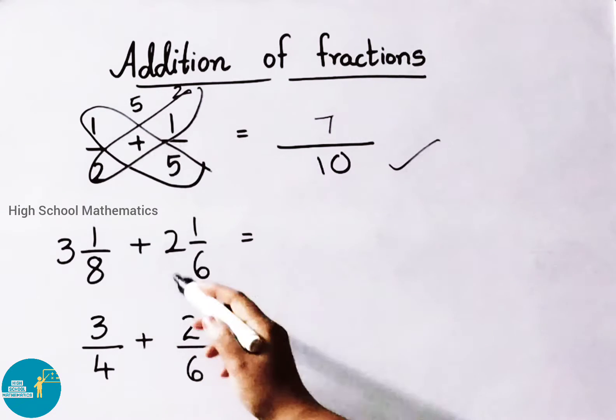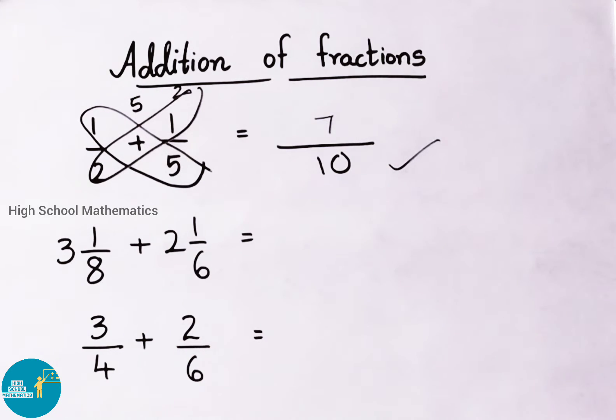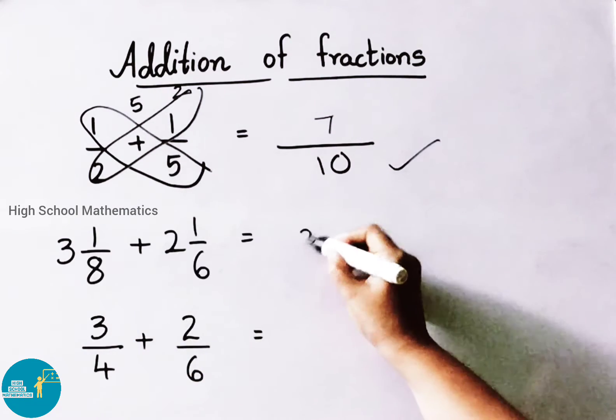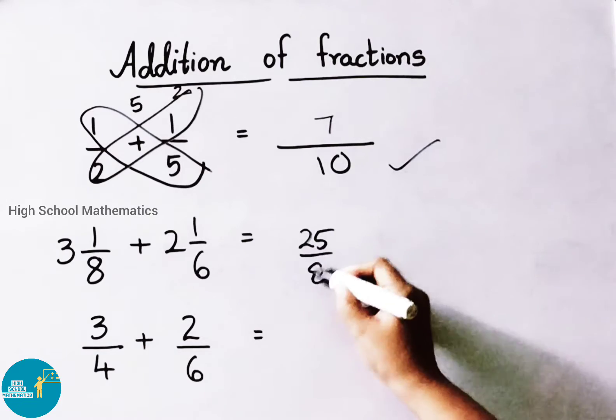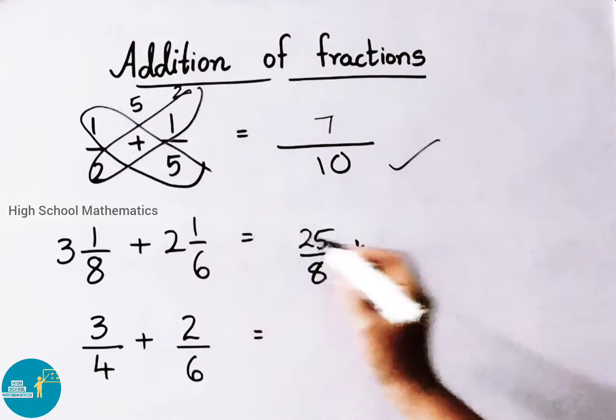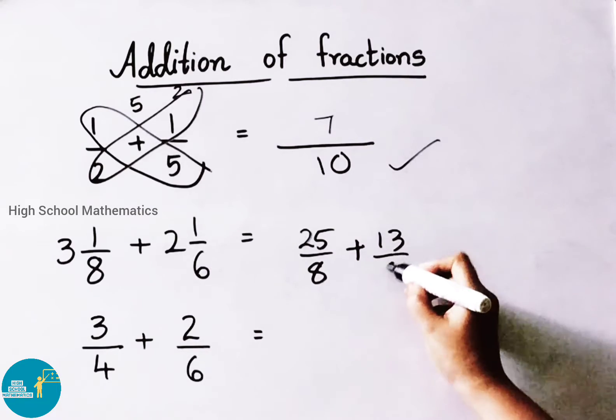See second one, 3 and 1 by 8 plus 2 and 1 by 6. First we have to convert these mixed fractions to improper. 8 times 3 is 24 plus 1, that is 25 by 8. Plus 6 times 2 is 12, 12 plus 1 is 13, write down 13 by 6.